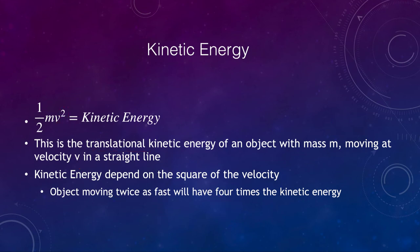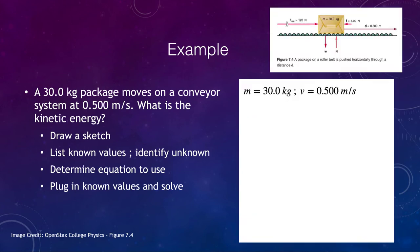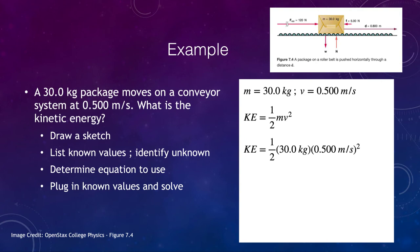Let's look at an example done in multiple parts. We have a package on a conveyor belt moving at 0.5 meters per second. The first step is to find the kinetic energy. We know the mass and the velocity, and we're trying to find the kinetic energy. Using one half mv squared and putting in the known values, we calculate that the kinetic energy of this object is 3.75 joules. We're just using the definition of kinetic energy to determine the amount of kinetic energy of this object right now.